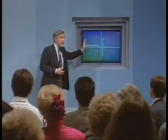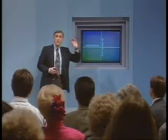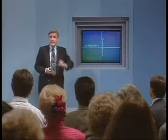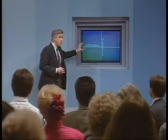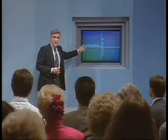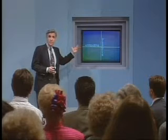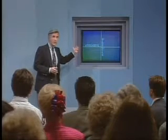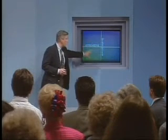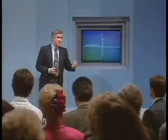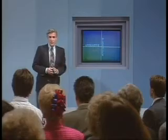Directive behavior, if it is high, is when we have a strong need to tell people what to do. Affiliative behavior, if it is high, is a strong need to be towards people. On the low end, directive behavior means we prefer to ask what to do. On the low end of affiliative behavior, we prefer to get things done rather than to be with people.